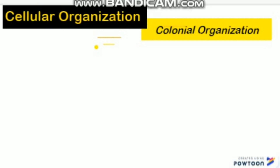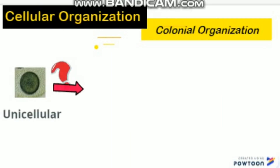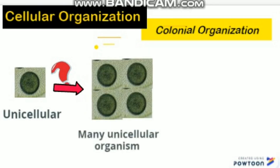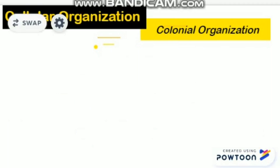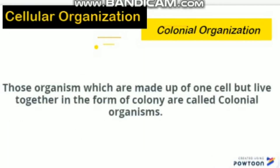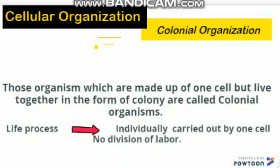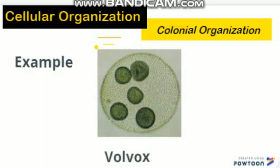The second type is colonial organization. What is this? This is a unicellular organism. Sometimes many unicellular organisms live together to form a colony, and this is called colonial organization. Those organisms which are made up of one cell but live together in the form of a colony are called colonial organisms. They live together but perform their activities individually, and there is no division of labor. An example is Volvox.